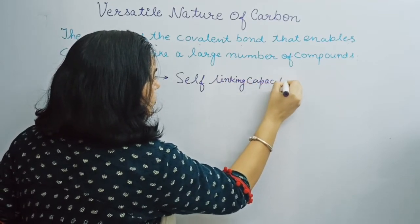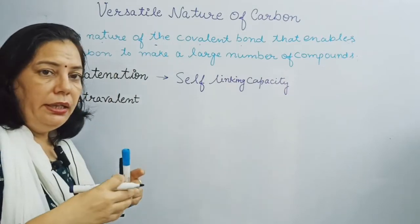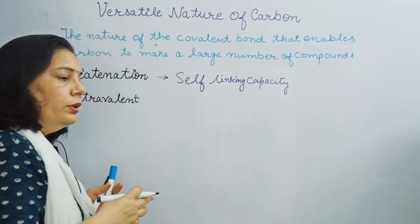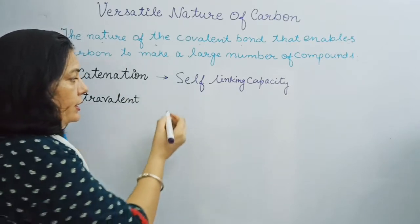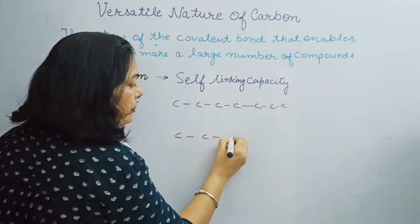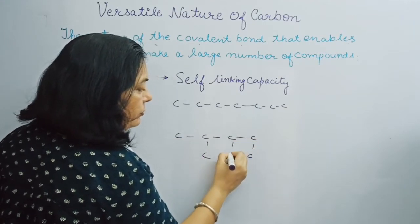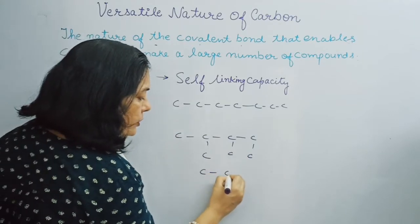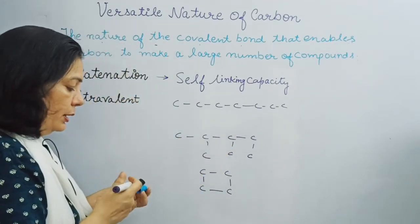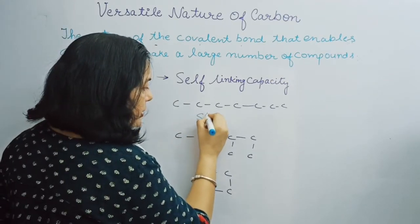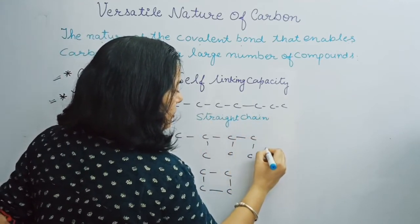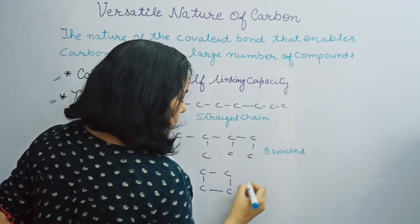If an element links with another atom of its own kind to form compounds, that property is called self-linking capacity, or catenation. This is the reason carbon can make long chains. The chain may be a straight chain — any number of carbon atoms can attach. It may also be a branched structure, or it may be a closed chain compound.